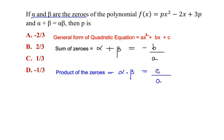Now in this given example let us find out what is our a, b, and c. By comparison, if we compare the given equation px² - 2x + 3p, we can see that in place of a we have p.